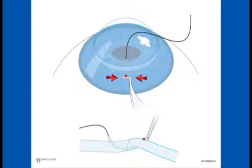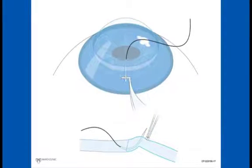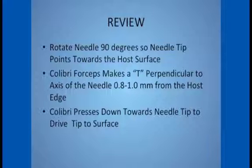The colibri is positioned on the host surface in a T position where the colibri is perpendicular to the axis of the needle and the needle tip is halfway between the two edges of the end of the colibri. Note that the colibri is also positioned about a millimeter from the host edge. Press down and actually cornea the needle instead of needling the cornea. If you have all your positions correct, it can only exit exactly where you plan to exit and should have the correct depth, length, and radiality.